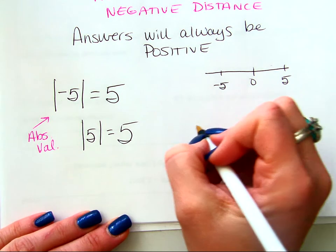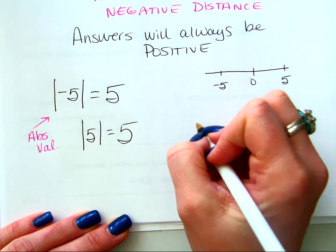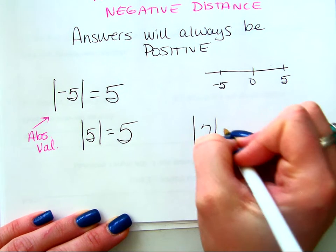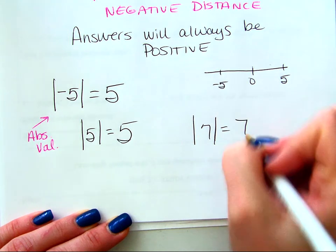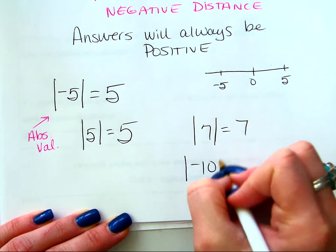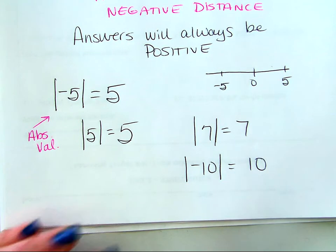So, if I were to say, what's the absolute value of seven? You would tell me? Seven. Seven. What's the absolute value of negative ten? Ten. You got it.